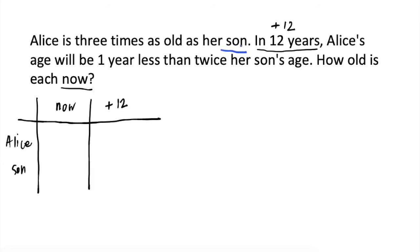I-assign natin ang age ni son as x. Alice is three times as old as her son. So, yan ay 3 times x or 3x. In 12 years, ang age nila ay madadagdagan ng 12. We will have 3x plus 12 at x plus 12.